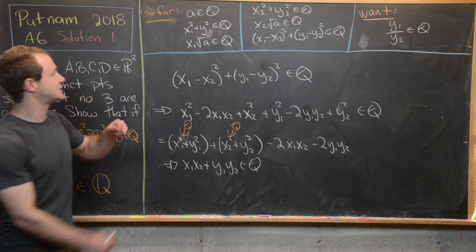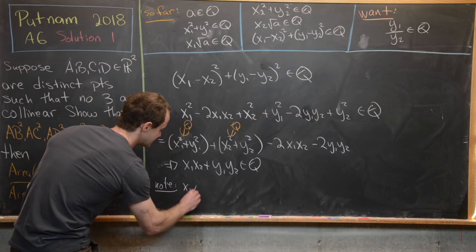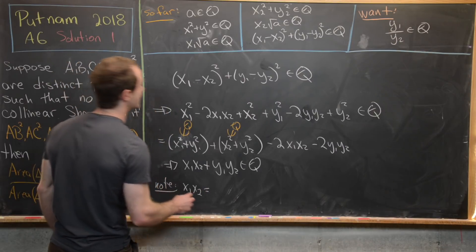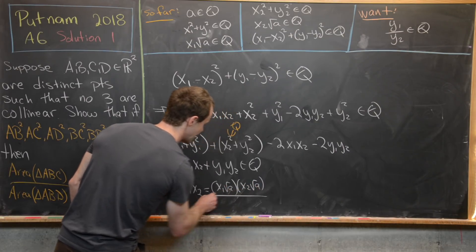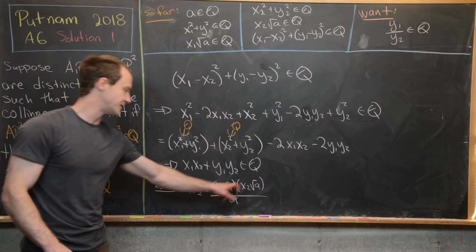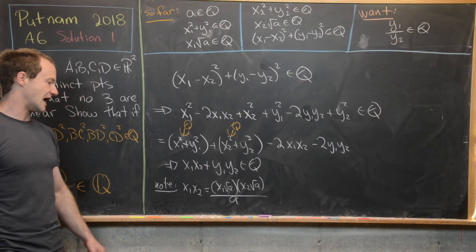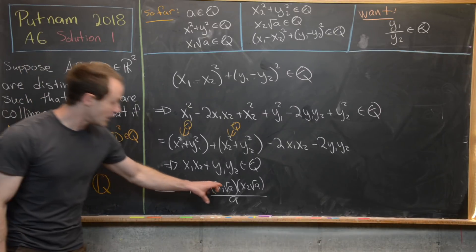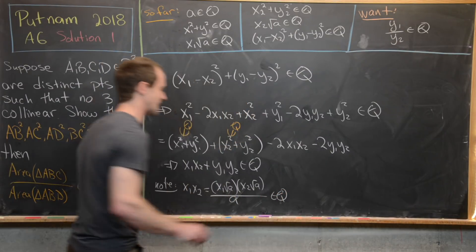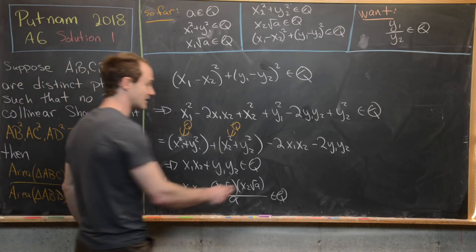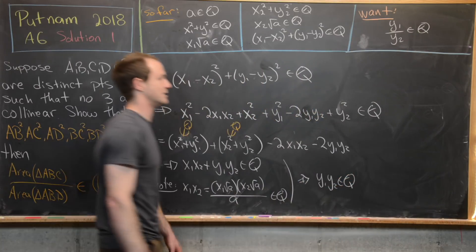Now we do something clever. We rewrite x1·x2 as (√a · x1)(√a · x2) / a. Each factor in the numerator is rational and a is rational, so x1x2 is a rational number. Since x1x2 + y1y2 is rational and x1x2 is rational, it follows that y1y2 is also a rational number.